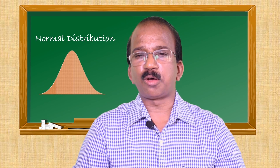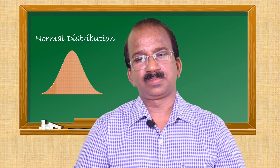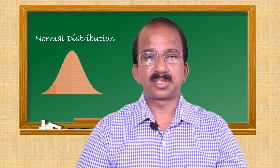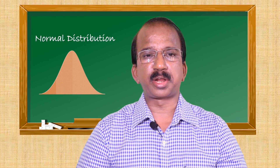Now we are at the end point where we will find the answer to our question. The question was: the height of students at Fatima College is normally distributed with a mean height of 160 centimeters and a standard deviation of 5 centimeters. What percentage of the students have height between 150 centimeters and 165 centimeters? The second part of the question: what percentage of the students have height above 170 centimeters? First, let us find the z-scores using x minus mu divided by sigma.